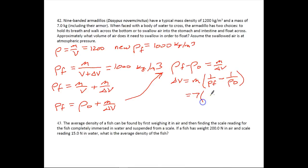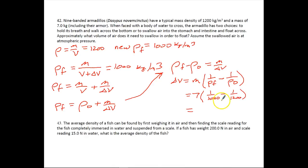This equals 7 times (1 over 1,000 minus 1 over 1,200). This is actually the bigger number minus the smaller one, so it should give you a positive number. The value 1/1,200 is smaller than 1/1,000. When you put that in your calculator and multiply by 7, you get about 1.2 times 10 to the negative third cubic meters. That's how much air needs to be swallowed.